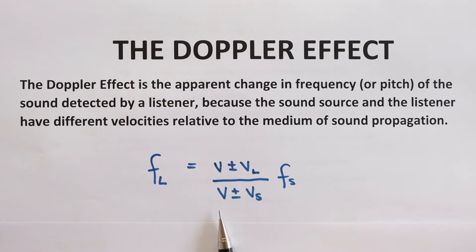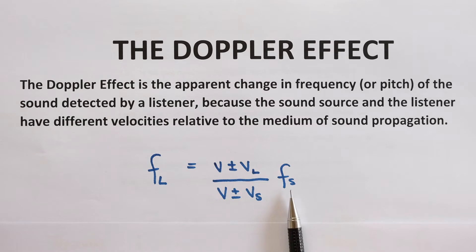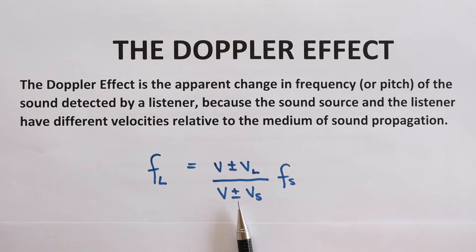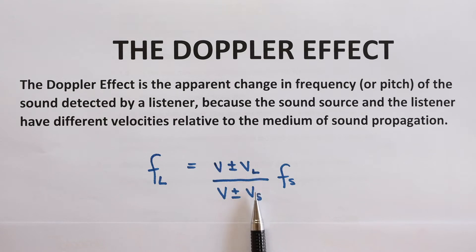You get this on your data sheet. F subscript L is the frequency that the listener or the observer hears. F subscript S is the frequency of the source — that would be the ambulance, the police vehicle, or a dolphin if a submarine is detecting the sound of a dolphin. V above and below the line is the velocity of the sound in the medium — it could be the velocity of sound in air, or if it is the dolphin and submarine example, the speed of sound in seawater. V subscript L is the velocity of the listener or observer, and V subscript S is the velocity of the source — the thing giving off the sound.